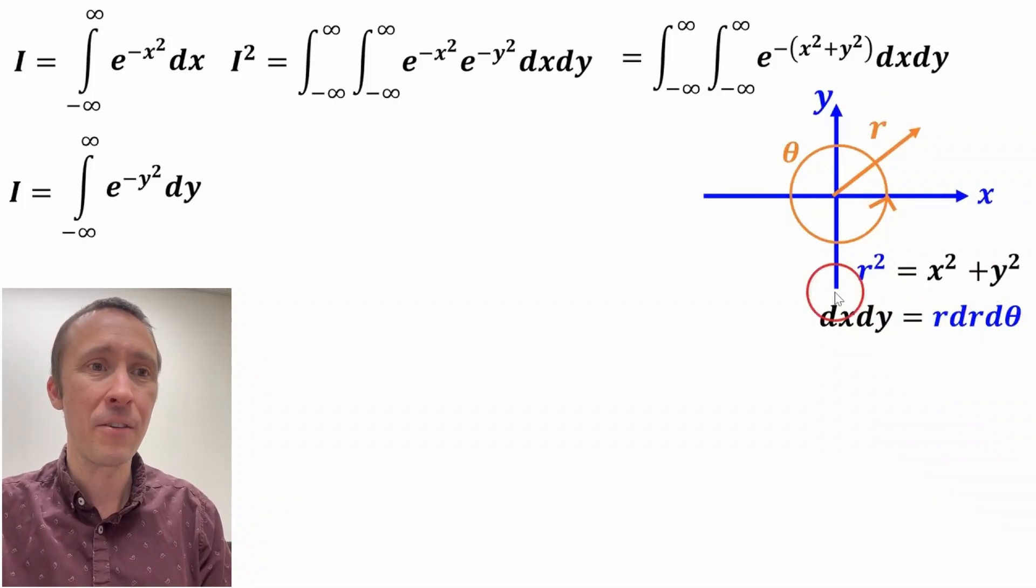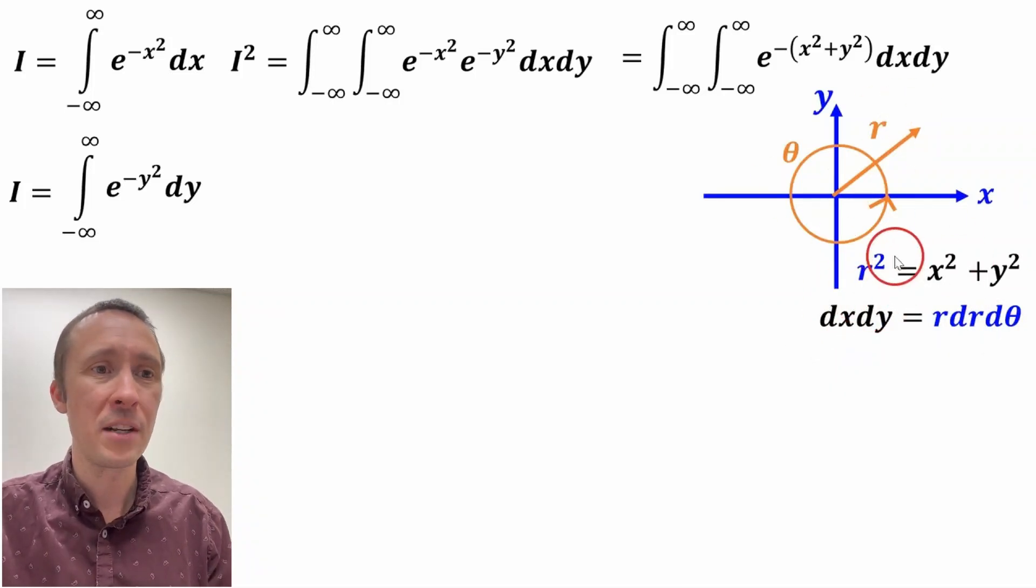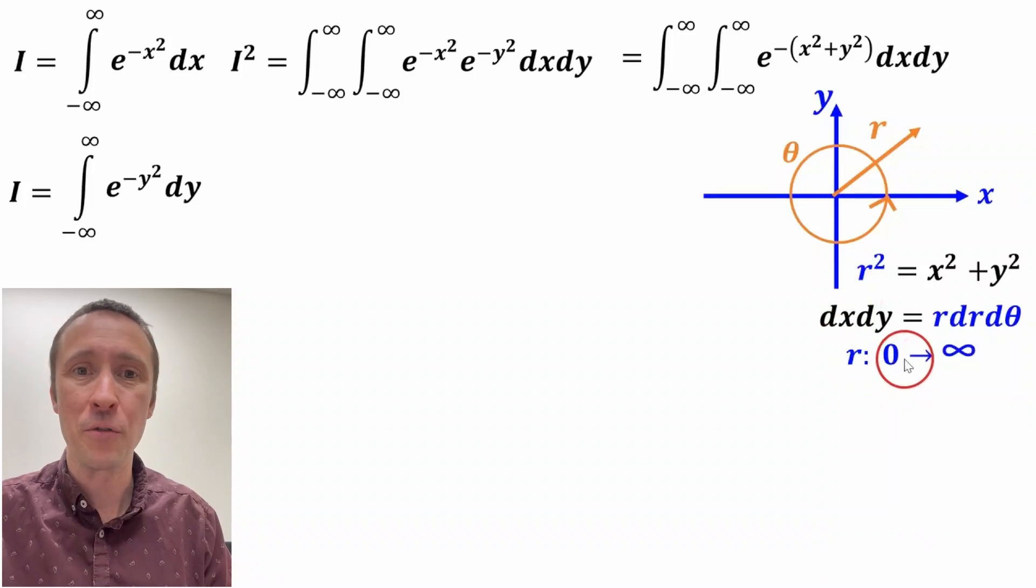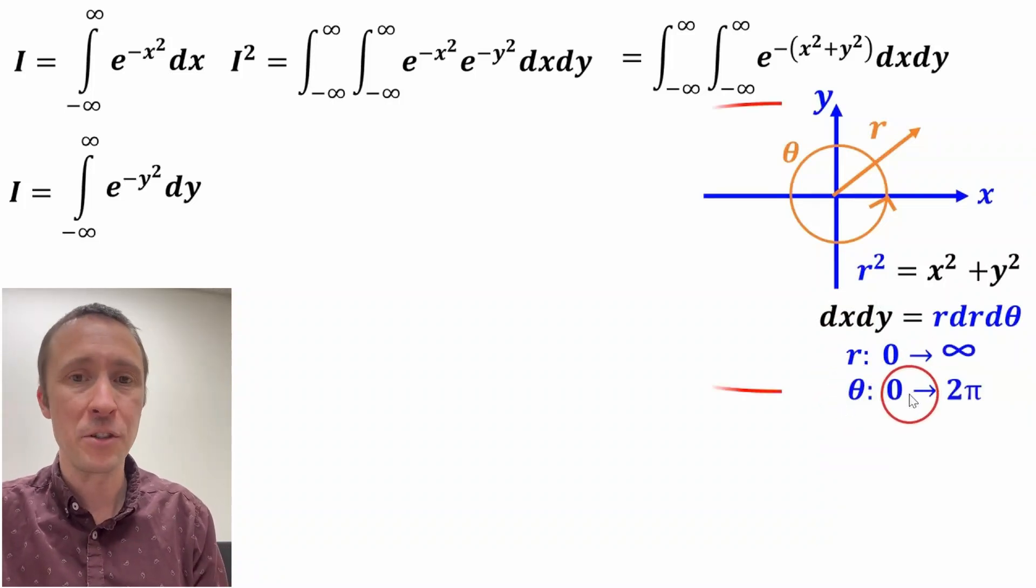Again, this is just an artifact of how to convert to polar coordinates. I went in detail of how to get this, but we're just going to use this result. In terms of the limits, r is going to go from zero to infinity and theta is going to go from zero to 2π.